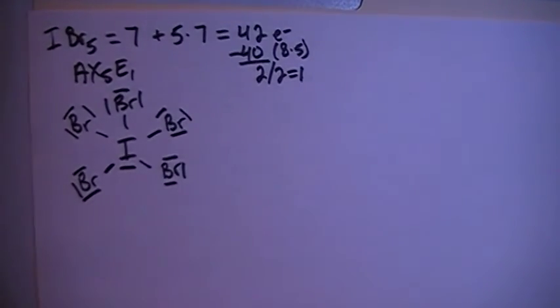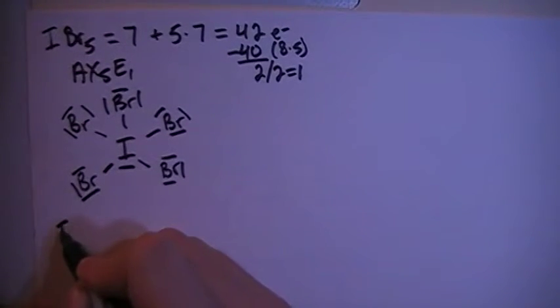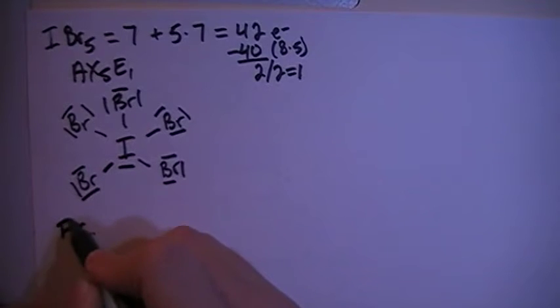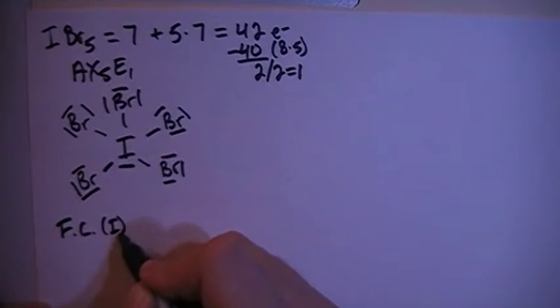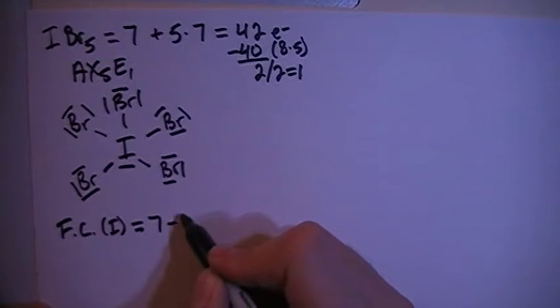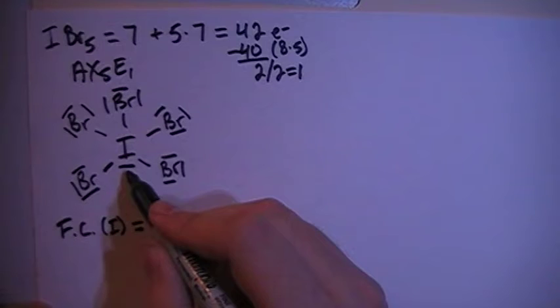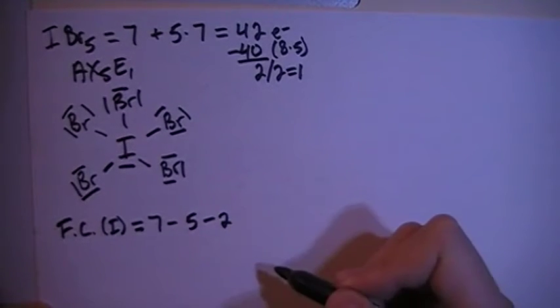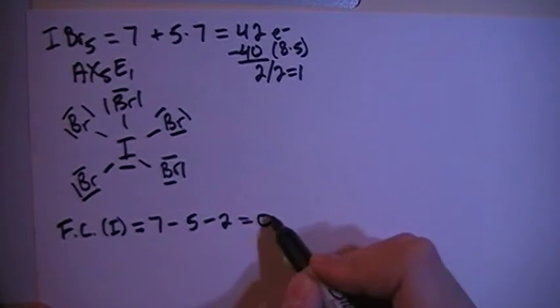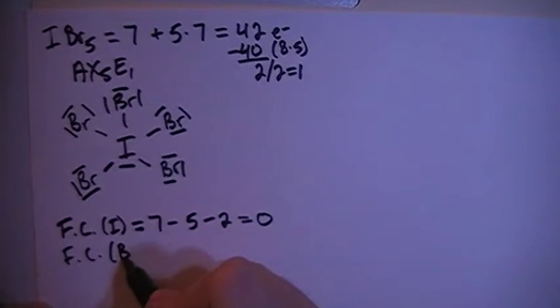And this is actually going to be our final structure. But now we can go ahead and verify that by checking the formal charges. So the formal charge on the central iodine is going to be the 7 valence electrons brought in, minus 1, 2, 3, 4, 5 bonds, minus 1, 2 non-bonding electrons for a formal charge of 0, and then the formal charge on each of the bromines.